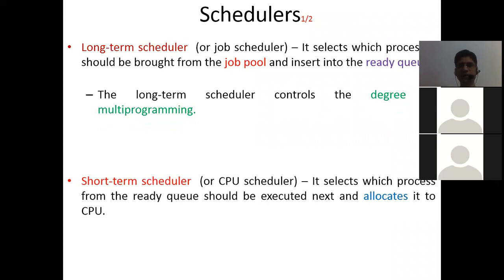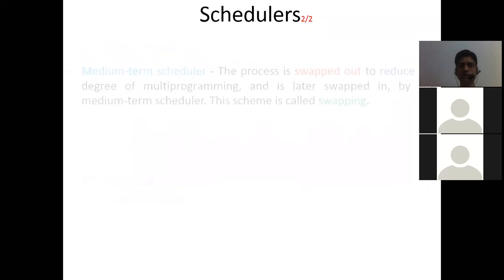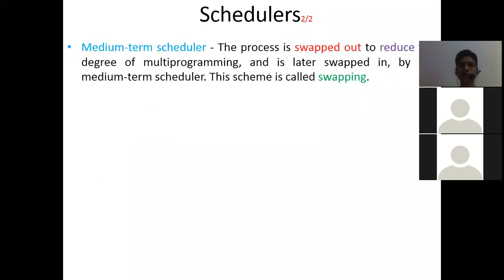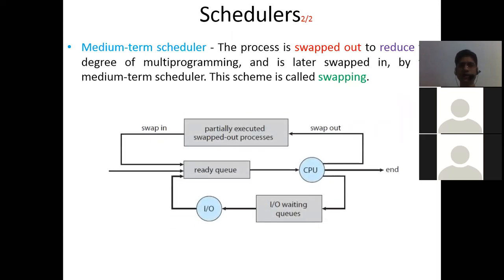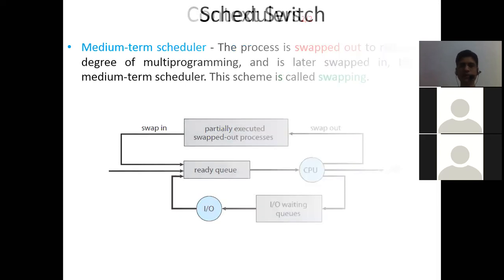There are three types of schedulers. The long-term scheduler controls the degree of multi-programming and decides how many processes will be in the ready queue. The short-term scheduler selects a process from the ready queue and allocates it to the CPU. There is also a medium-term scheduler, which reduces the degree of multi-programming by swapping out partially executed processes.